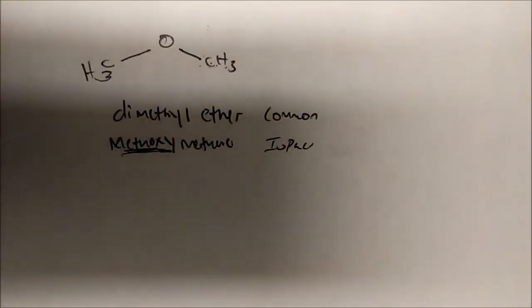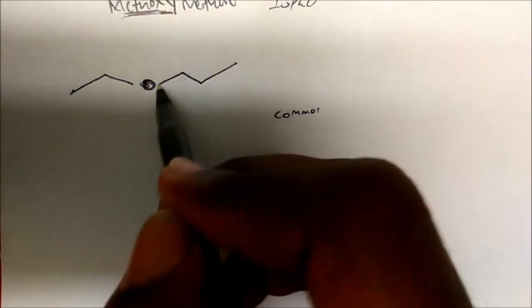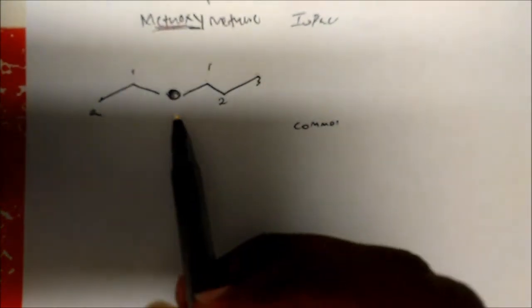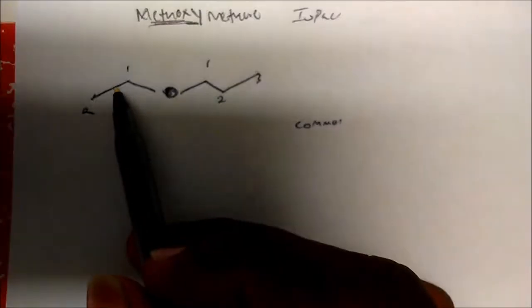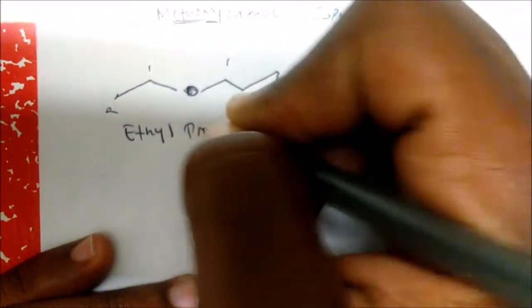Let's go through a couple more examples to hammer down this concept. If we have this next molecule, what would be the common name and IUPAC name? Starting with the common name, we identify our ether oxygen and look at the substituents bonded on either side. On one side we count one, two, three carbons — that's a propyl group. On the other side we have one, two carbons — that's an ethyl group.